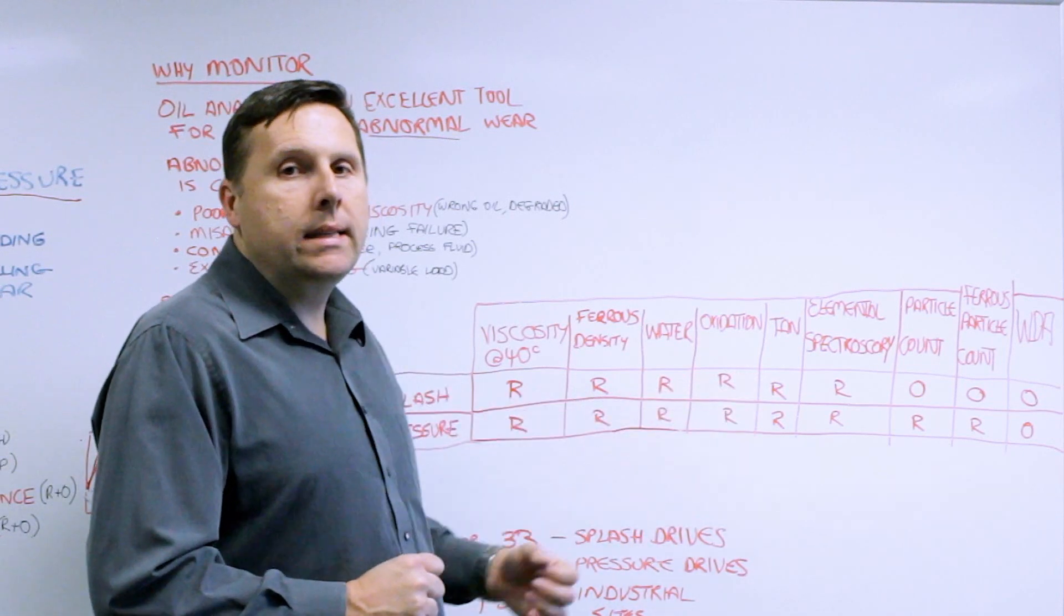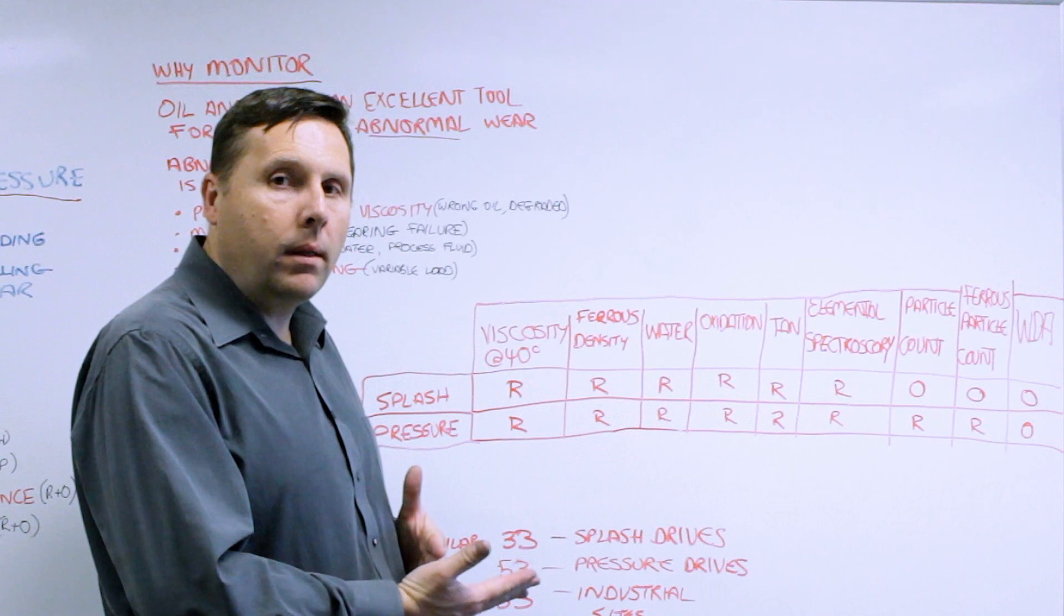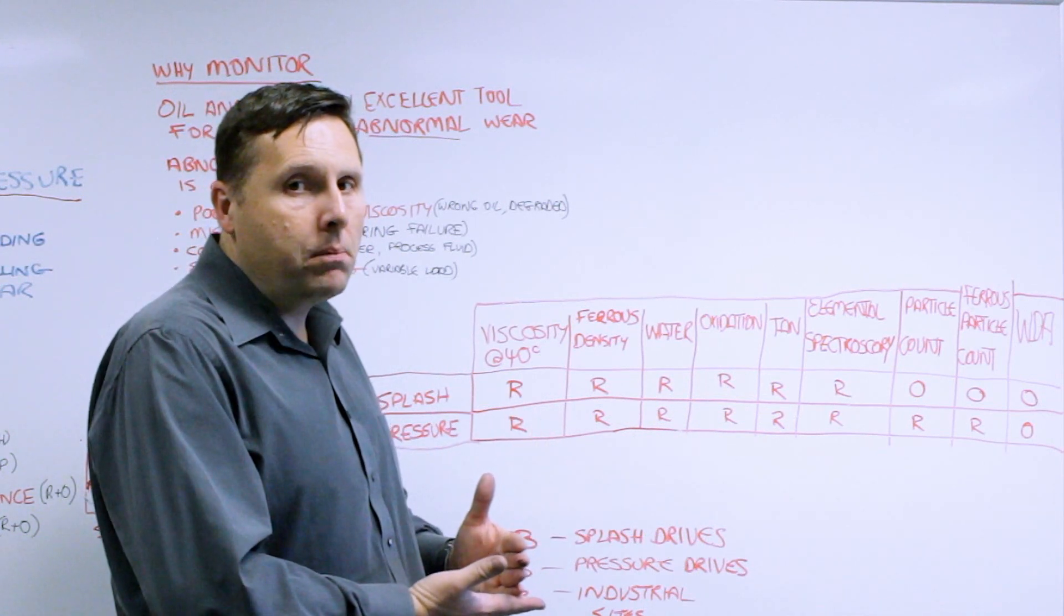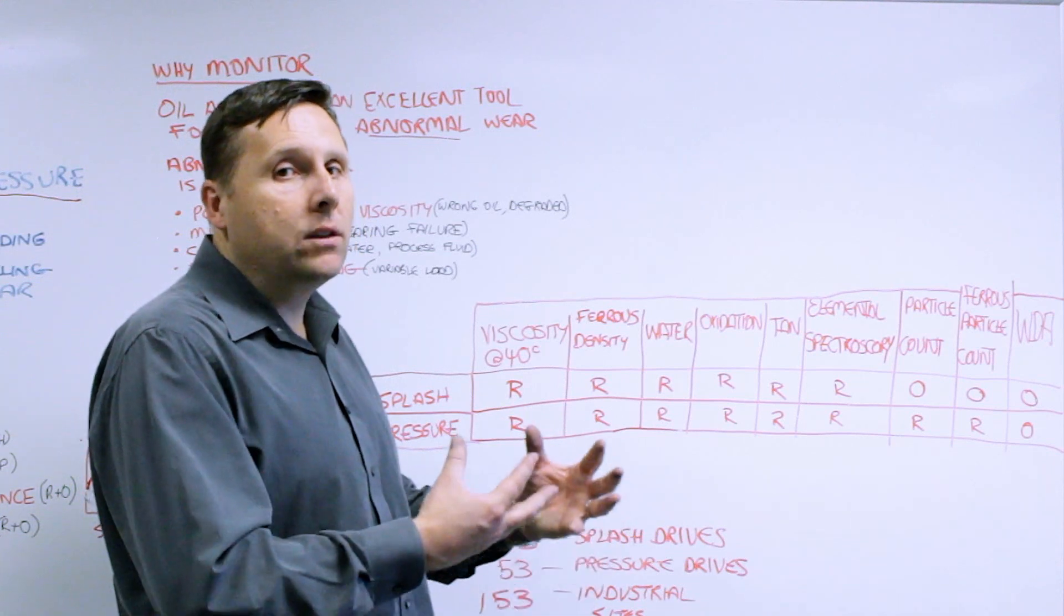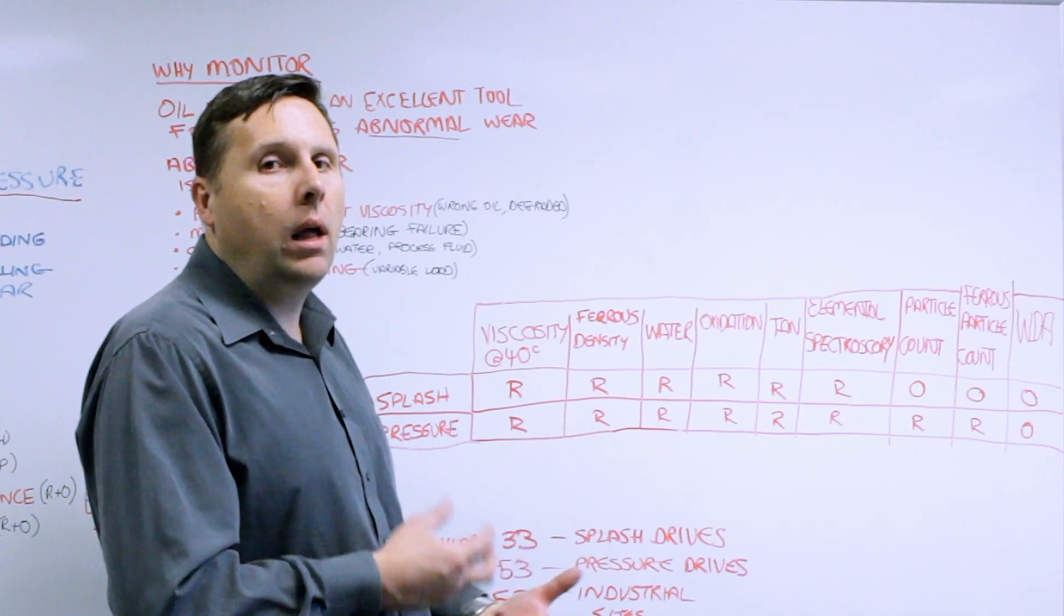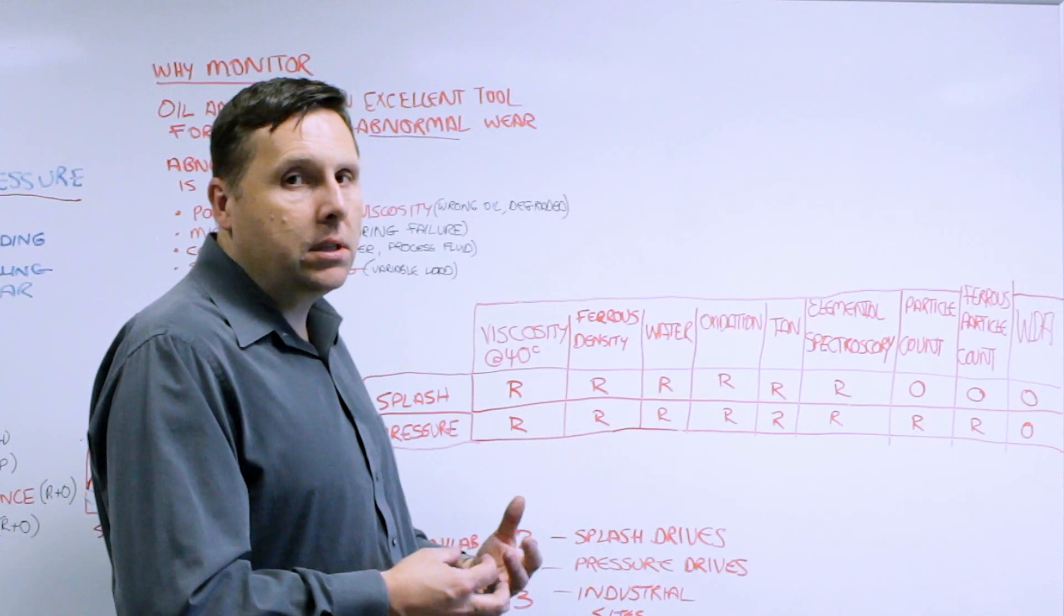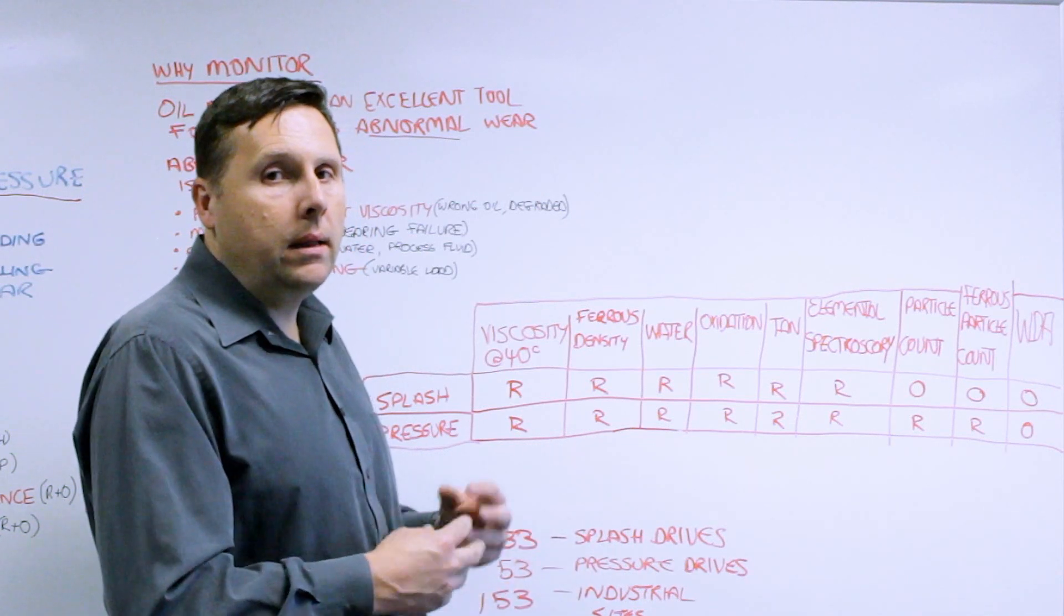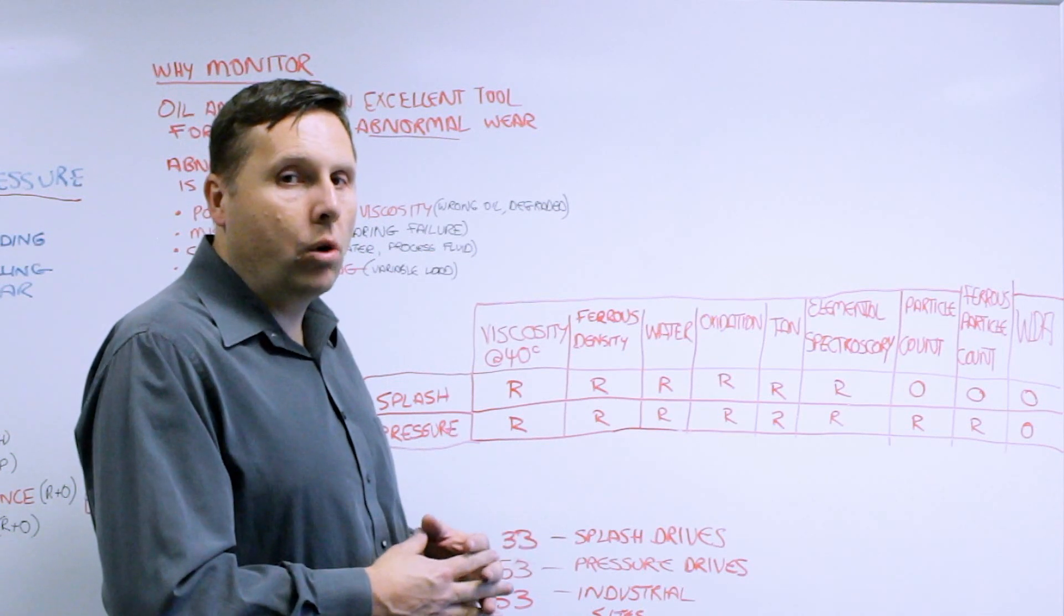Elemental spectroscopy is excellent for looking at the additive elements that are present as well as the very fine wear that's being produced, ferrous wear, as well as the non-ferrous wear that can be common in a lot of gear systems especially with bearing supports as well as in sacrificial gear systems such as worm gears.